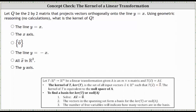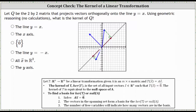So let's take a look at this geometrically. I have the line y equals x graphed in black. Let's assume the blue vectors are the input vectors and the red vectors are the images of the blue vectors under the transformation, or the output vectors.